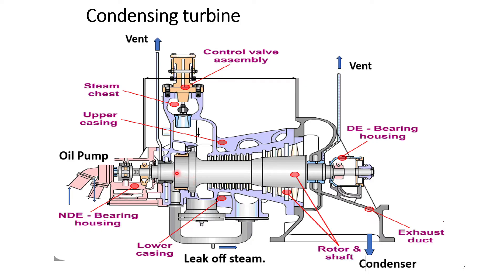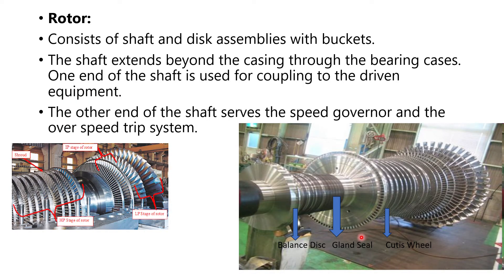One more thing we can see here is the leak-off line. What happens is when the steam comes on the balance disk, the pressure is much higher there, and a part of that steam through a leak-off line is bypassed to some lower stage of the turbine where it does some work to drive the rotors. This is the rotor shaft and these are all the rotor blades.